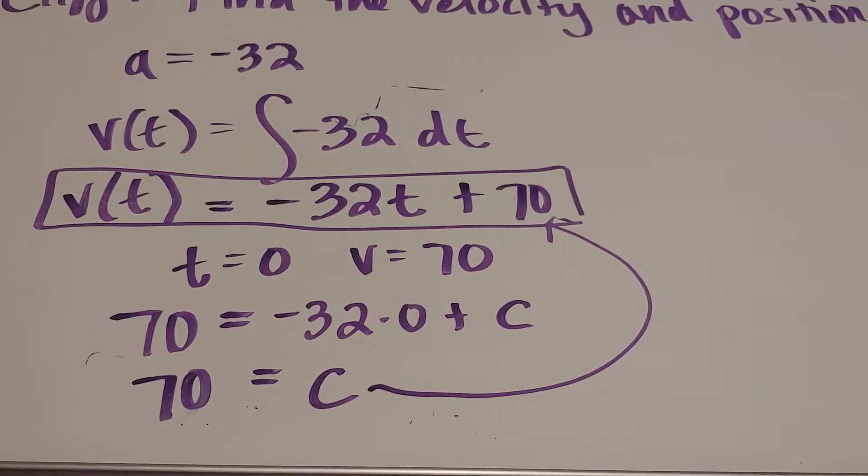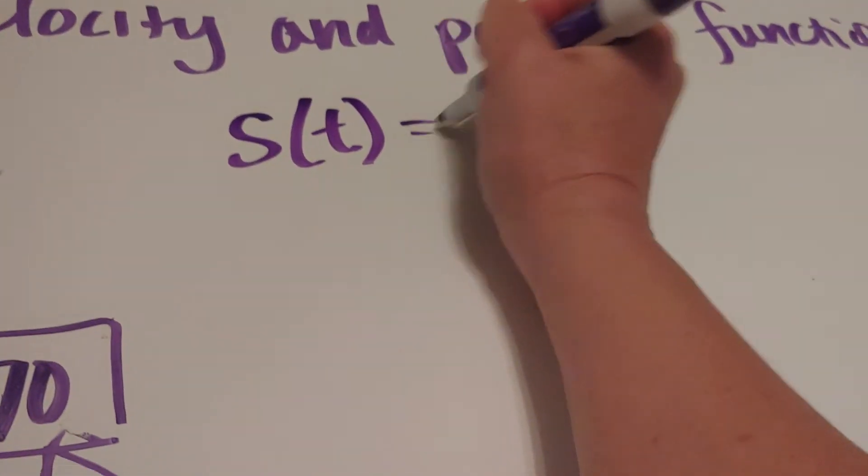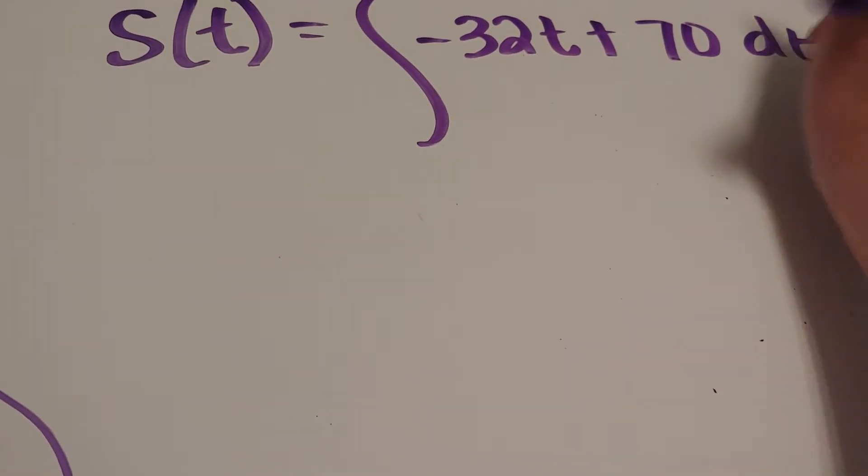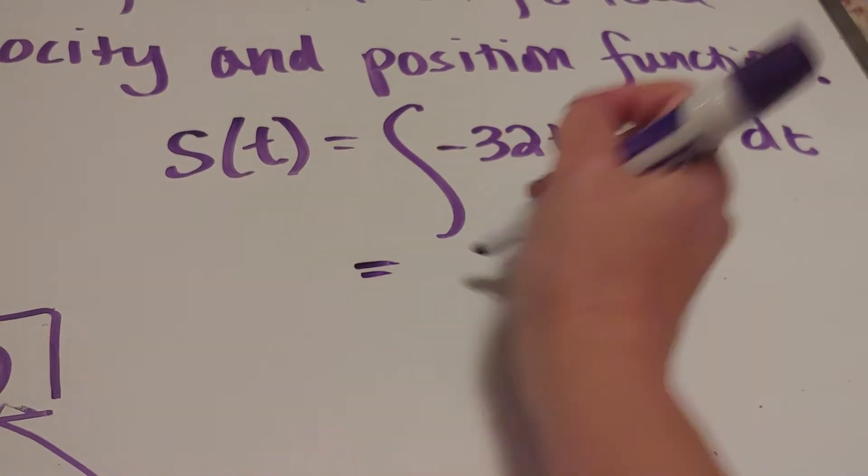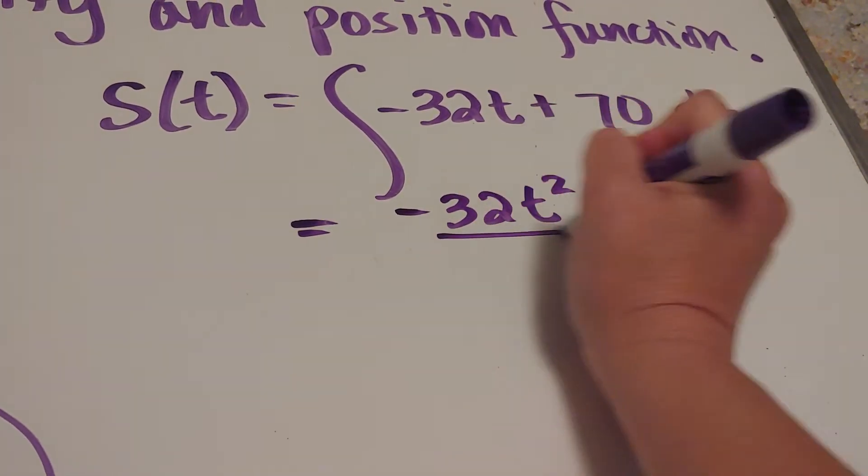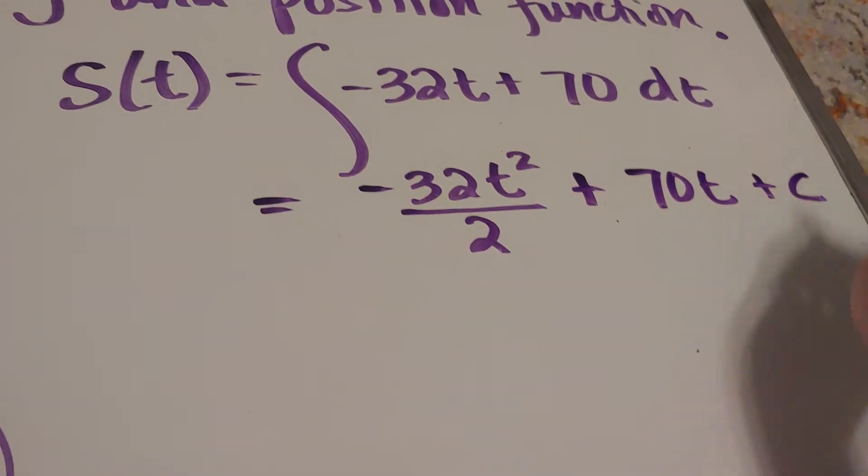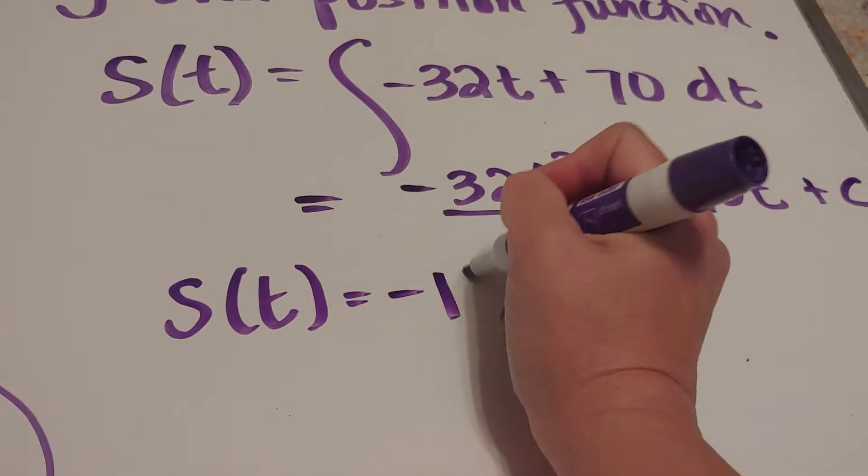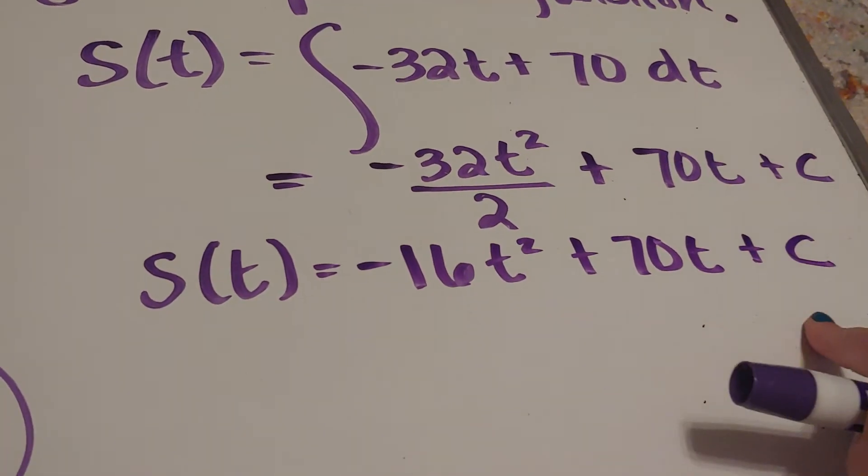Now I want to find the position. So to find the position, I'm going to integrate this. So to get the position, I want to integrate negative 32t plus 70 dt. So let's go ahead and integrate this. Integration has a guide - add a one and then divide. And then 70t plus c. Let's clean it up just a little bit, so this position function is going to be negative 16t squared plus 70t plus that c.